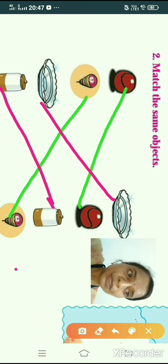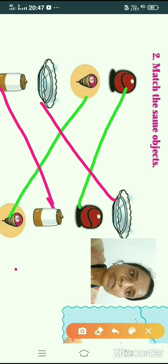In this session, we learn two questions. First question is trace the dot. And second question is match the same object. Okay. Okay, children.